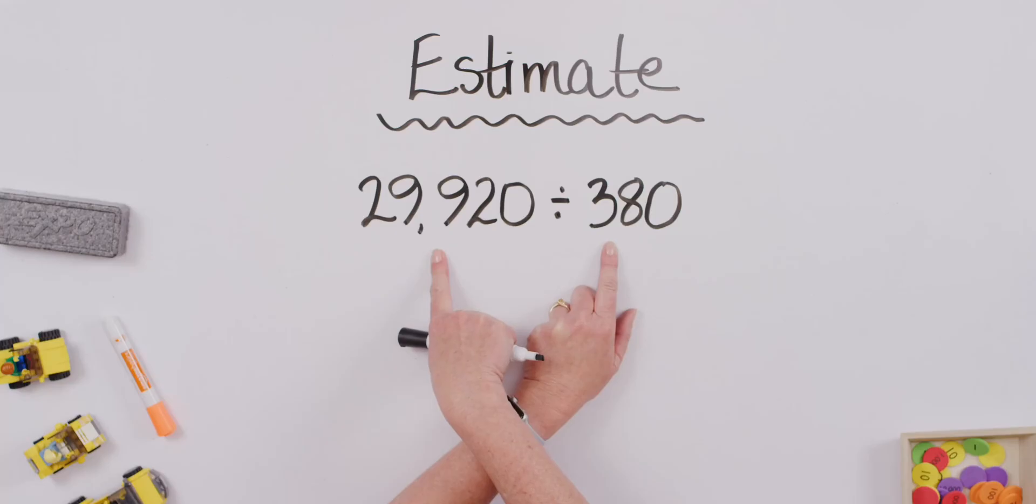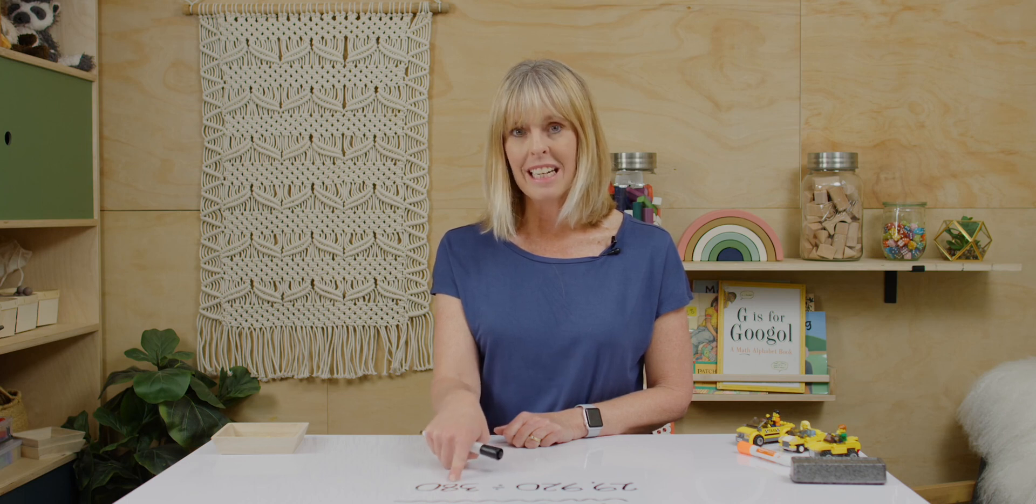If this is our divisor, who remembers what this is called when we're dividing? Great. The dividend. But you're going to look at your divisor and go, let's try to round this to an even 100. I'm going to go next door from my hundreds place. I see an 8. Am I going to round up or round down? Excellent. We're going to round up. So, we're going to round that 3 up to a 4. Now, our next step, after we round our divisor, we are going to look at our 4 and look at our 29 over here.